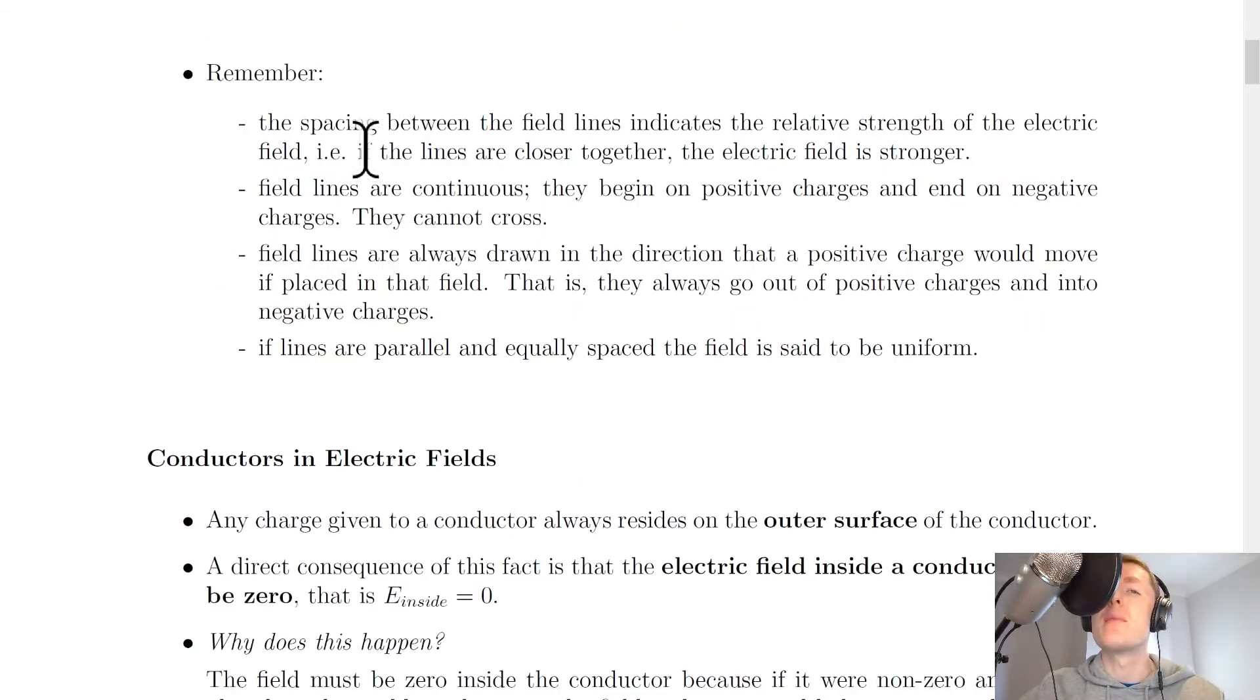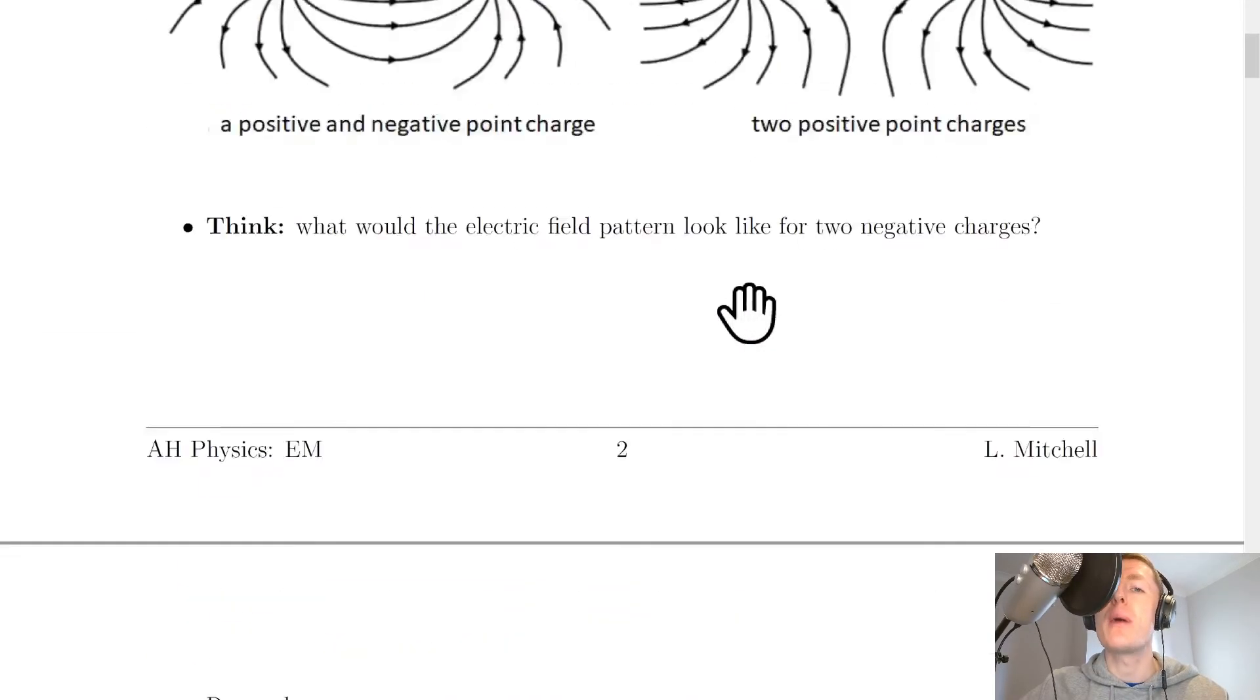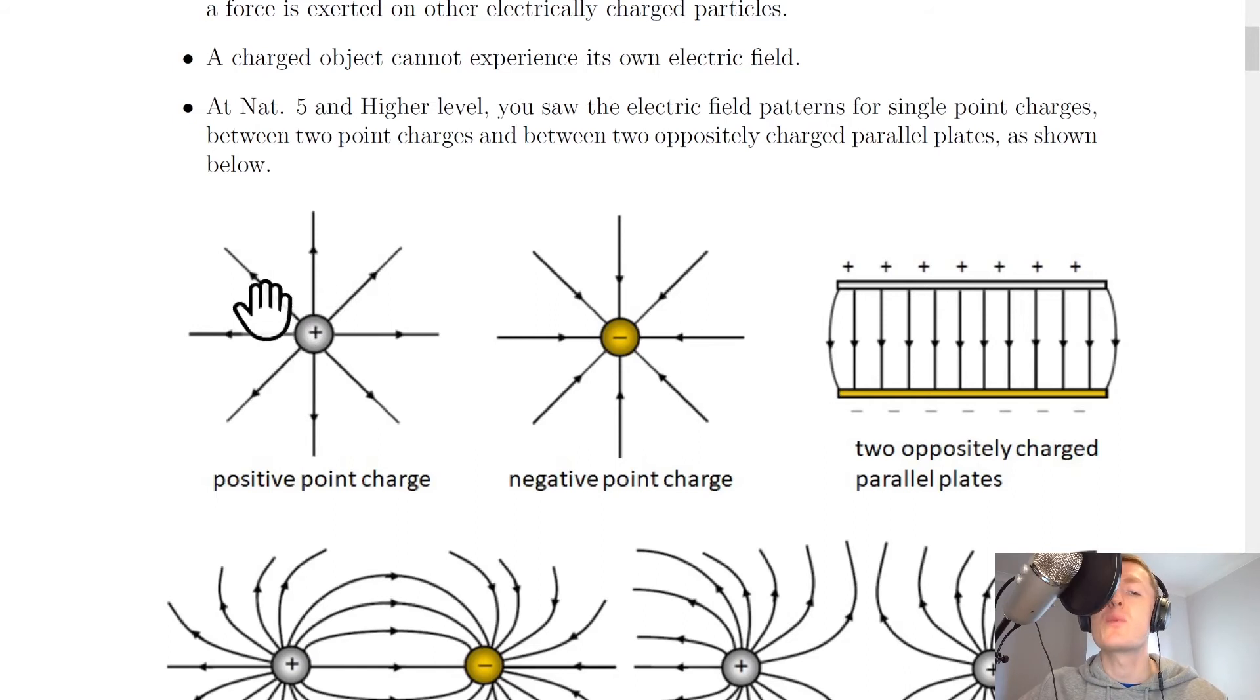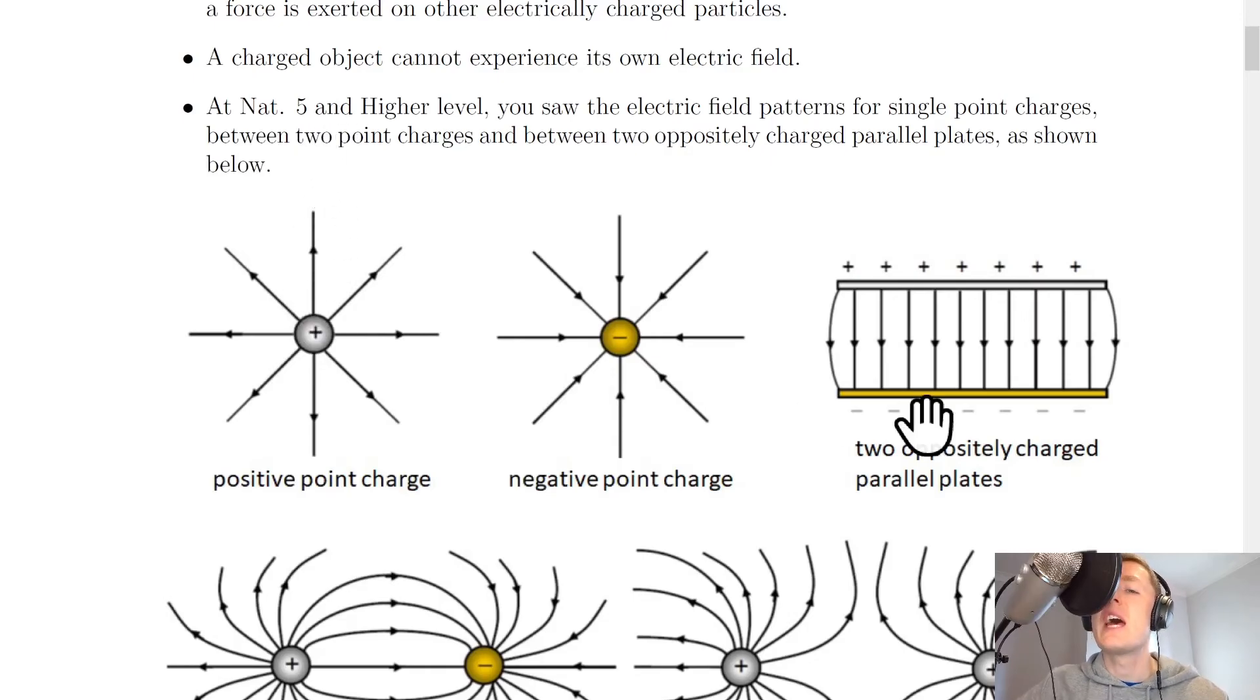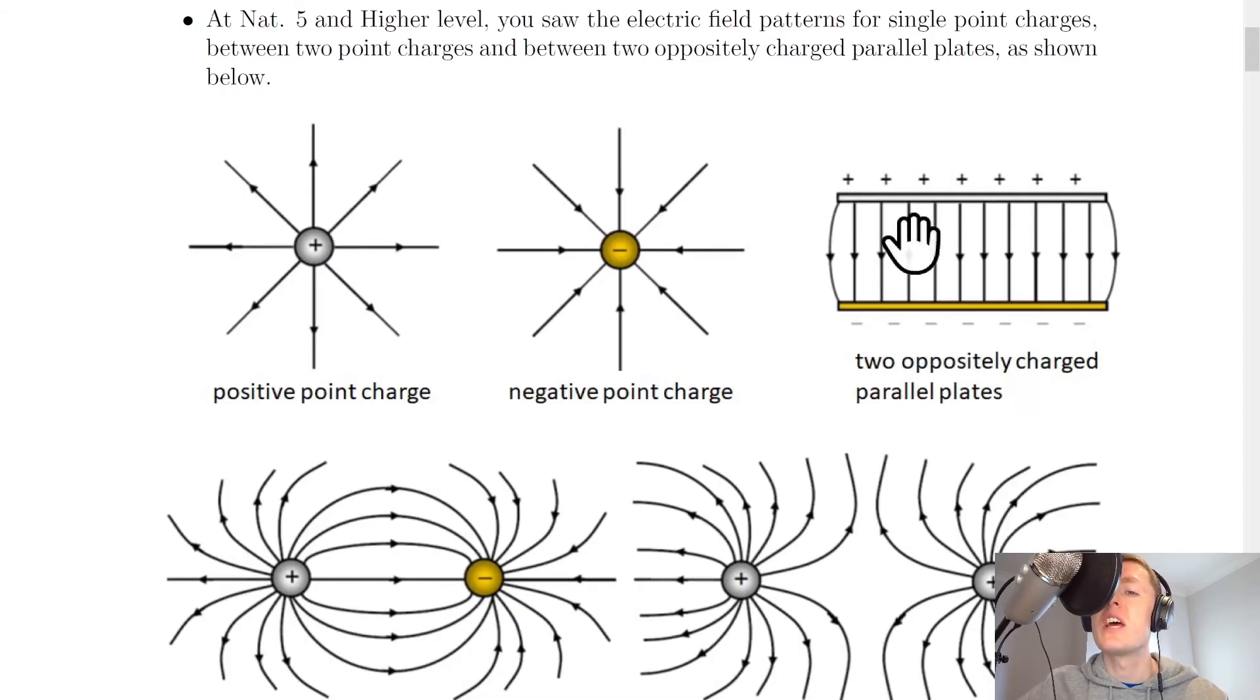And here are some rules that you need to remember when drawing electric field lines. The spacing between the field lines indicates the relative strength of the electric field, i.e. if the lines are closer together the electric field is stronger. So if we look back at some of our patterns for example, nearest the charge is where the field lines are closest, so the electric field will be strongest at that point. Whereas if you get further and further away from the charge, the electric field will decrease. However for the two oppositely charged parallel plates, notice how the field lines have the same spacing between them, which means that we have a uniform field, so the field is the same strength at all points.